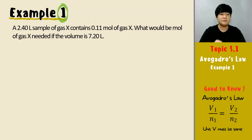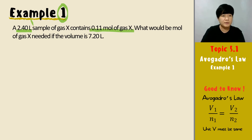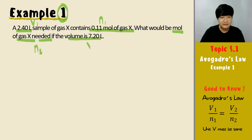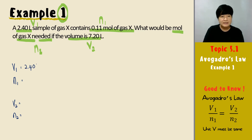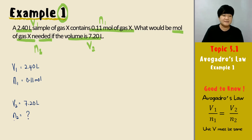Let's try Example 1. A 2.4-litre sample X contains 0.11 moles of gas X — so that is your V1 and n1. What would be the number of moles of gas X needed if the volume is 7.2 litres — that is V2. Group the values: V1 = 2.4 L, n1 = 0.11 mol, V2 = 7.2 L, and we are looking for n2.